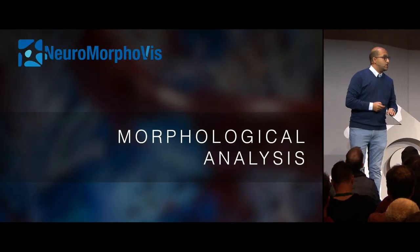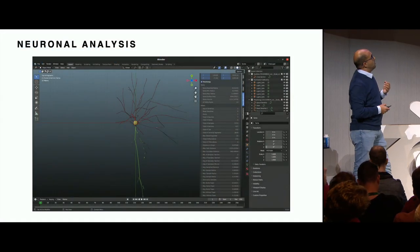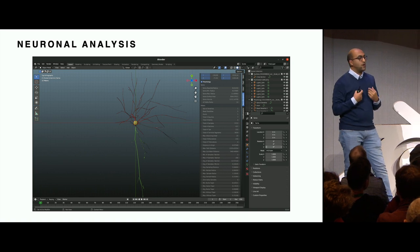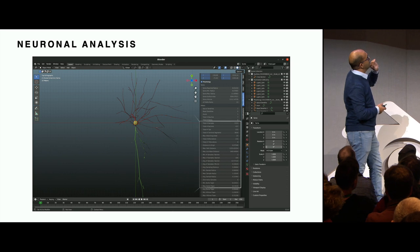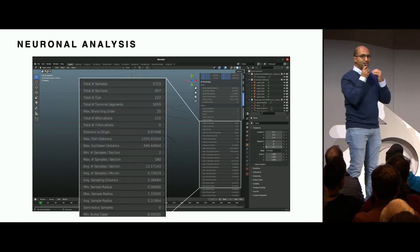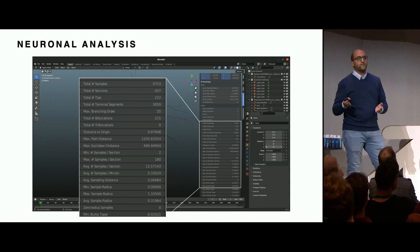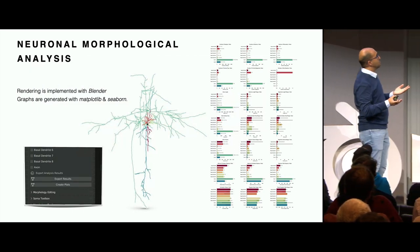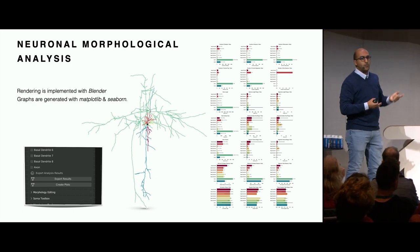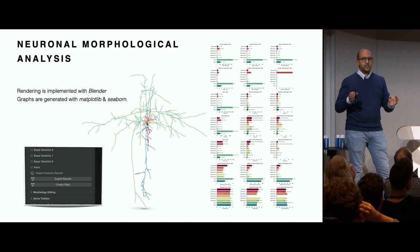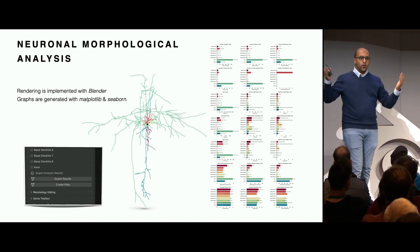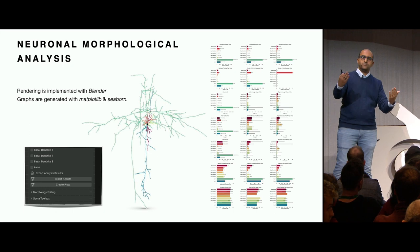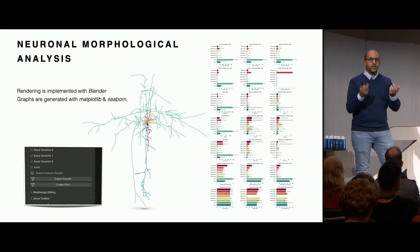That's just visualization - what about analysis? We've used the Blender user interface and integrated a module in our add-on so once you load the neuron you can analyze it completely and display all the morphometric characteristics. Moreover, you can export the results into figures, and using the same color pattern you can visualize the neuron the same way. You end up with one file containing all results - the structure and the analysis - all in one go.